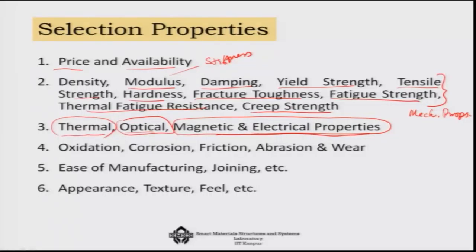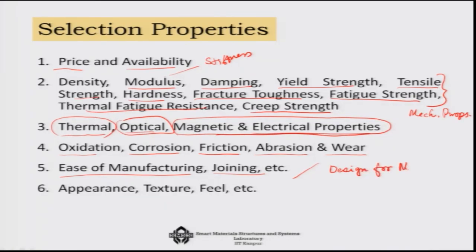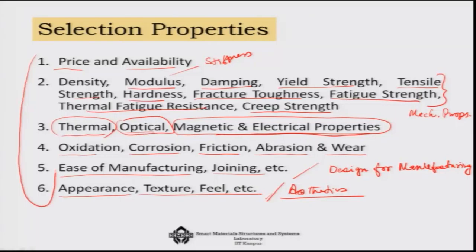Next is the chemical environment — oxidation and corrosion become important. There could be friction in the system, so frictional properties are important. There could be abrasion or wear and tear, so those properties become important — that is property set number four. Property set number five involves ease of manufacturing and joining, which is related to the manufacturability of the system — design for manufacturing. And finally we have to think of appearance, texture, and feel, so aesthetics becomes important as the sixth property set.